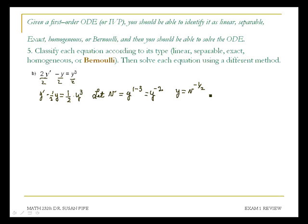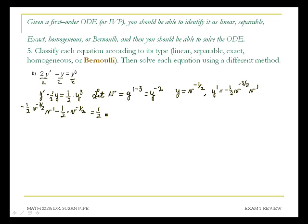So wherever I see y, I'm going to replace it with v to the negative 1 half power. And then for my derivative, I'm going to get y prime equals negative 1 half v to the negative 3 halves v prime. And then I get minus 1 half times y — y is v to the negative 1 half. So I have v to the negative 1 half equals 1 half, on the right side I have y to the 3rd, and y is v to the negative 1 half, so I have v to the negative 1 half raised to the 3rd power.